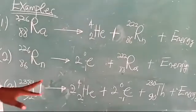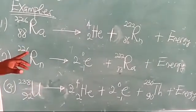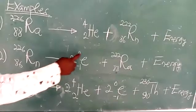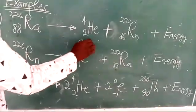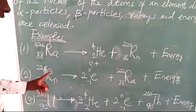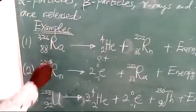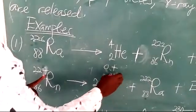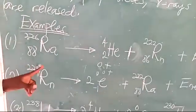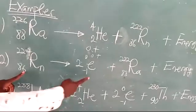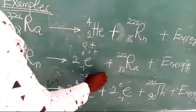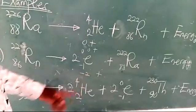Now the second equation: if you look at it, we have 226 here, so the total mass we have on the right should be 226. Since we have 2 beta particles, we multiply 2 by 0, so 2 times 0 will give us 0, plus the mass of 222 here, giving us 222. Now this is 88, so the total atomic numbers should give us 88. Two times minus 1 would be minus 2, added to the 88 here, will give us 86.